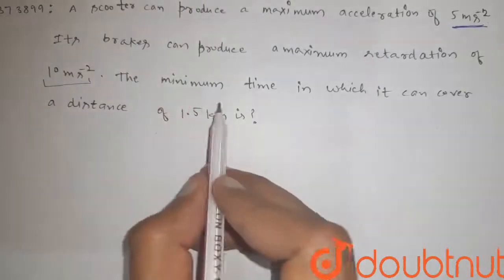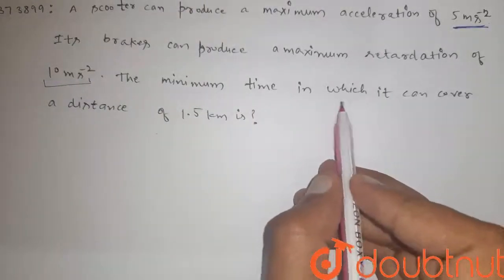Hi guys, here is the question. A scooter can produce a maximum acceleration of 5 meter per second square. Its brakes can produce a maximum retardation of 10 meter per second square. The minimum time in which it can cover a distance of 1.5 kilometer is?